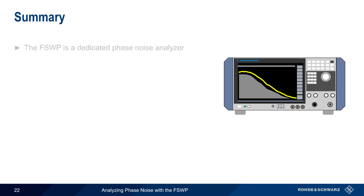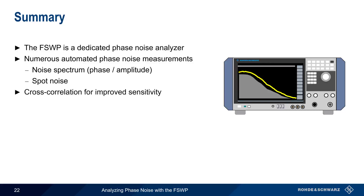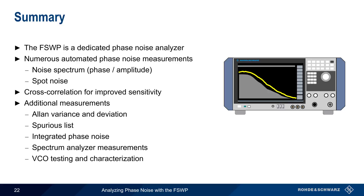Let's end with a brief summary. The Rohde & Schwarz FSWP is a dedicated phase noise analyzer that supports numerous phase noise measurement types. Results are most often displayed as a single sideband plot of noise spectrum and/or as spot noise at specified offsets. By adding a second internal measurement path, the FSWP can use cross-correlation to remove the influence of instrument noise and greatly increase measurement sensitivity. Additional measurements include Allan Variance and Deviation, spurious signal measurements, and integrated phase noise measurements. The FSWP can also perform standard spectrum analyzer measurements such as spur search and noise figure, and has integrated high-quality power supplies for testing voltage controlled oscillators. This concludes our presentation, 'Analyzing Phase Noise with Rohde & Schwarz FSWP.' For more information, please see the links in the video description.